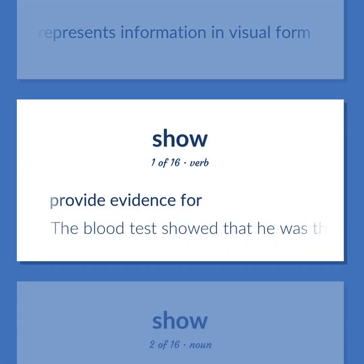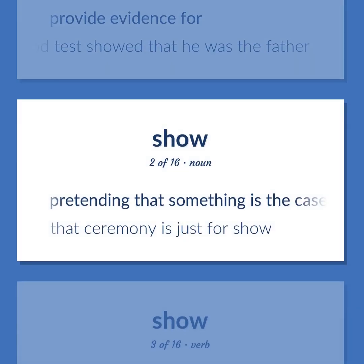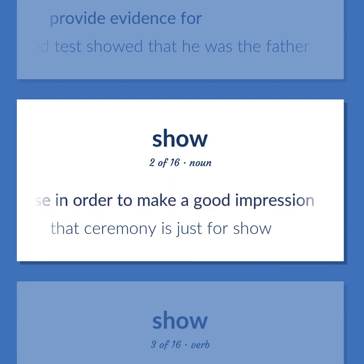Show: Provide evidence for. The blood test showed that he was the father. Pretending that something is the case in order to make a good impression. That ceremony is just for show.